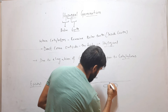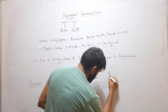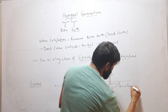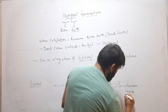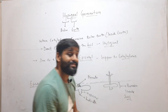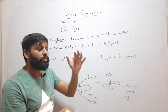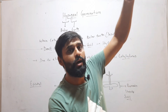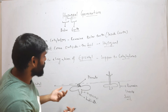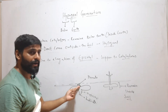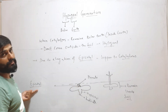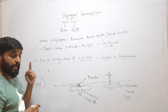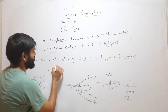The cotyledons will remain inside the soil. So this is the type of germination in which cotyledons remain below the soil and only the plumule comes out. This occurs because of the elongation of the epicotyl — when the epicotyl elongates, the germination type will be hypogeal.